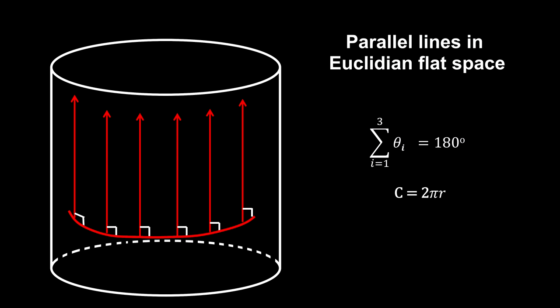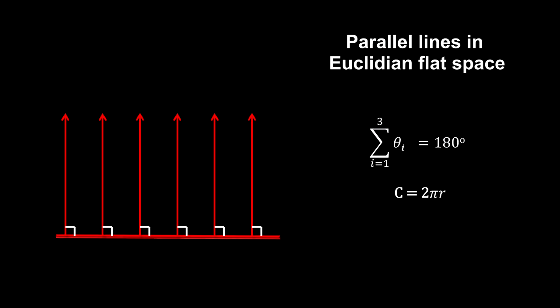Parallel lines remain parallel. The sum of the angles of a triangle is still 180 degrees, and the circumference of a circle is still 2 pi times its radius. But there are other possibilities.